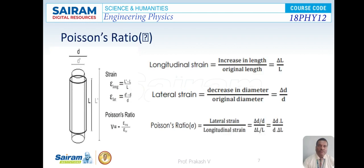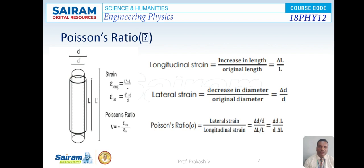Another concept is Poisson's ratio. When a body is subjected to a force or a system of forces, the deformation does not only take place in one direction but in all directions. If a wire is stretched, it undergoes extension along the direction of force and also undergoes contraction in the perpendicular direction. The strain produced along the direction of force is called longitudinal strain, and that produced in the perpendicular direction is called lateral strain.